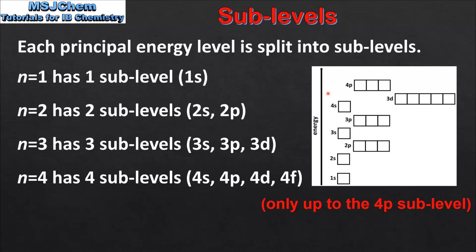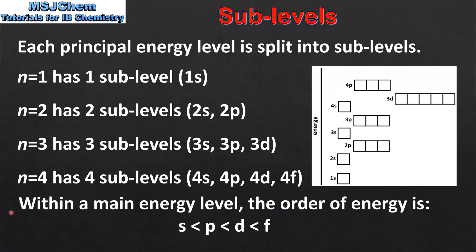In the next video we will look at how these sublevels are filled with electrons. Note that within the main energy level, the order of energy is as follows: the S sublevel is the lowest energy and the F sublevel is the highest energy. For example, the 4s sublevel is the lowest energy and the 4f sublevel is the highest energy within the n=4 level.